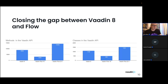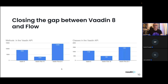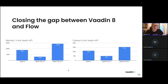Right now we're also celebrating the second minor release of Vaadin Flow 24.1. Vaadin Flow 24.1 has a significantly larger number of methods and classes than Flow 10 — actually more classes and methods than Vaadin 8 had. Over time, it's becoming easier and easier to upgrade Vaadin 8 applications to Flow, with so many features being added.